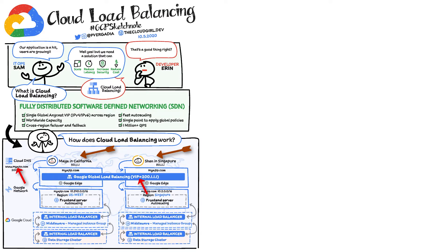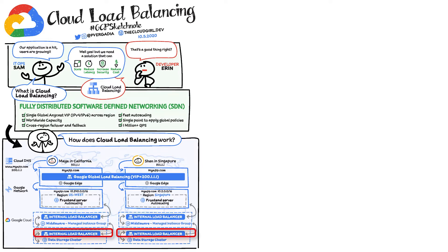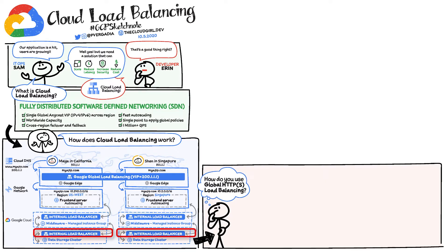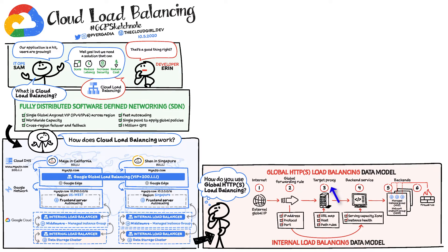From the front-end server, the request lands on the internal load balancer to balance load across the middleware or the data storage layers. Setting it up is easy — you set up the forwarding rule, target proxy, and the back-end service with managed instance groups or network endpoint groups.